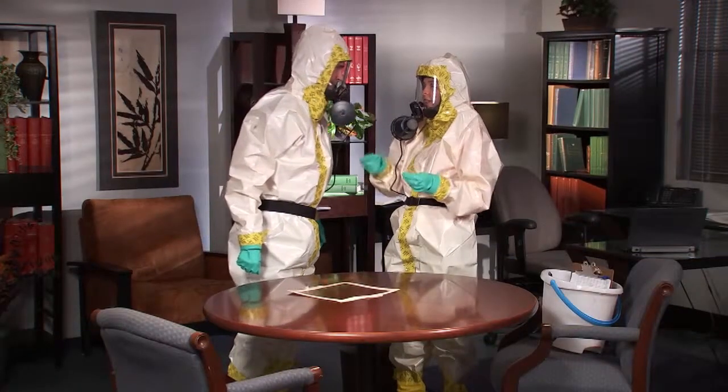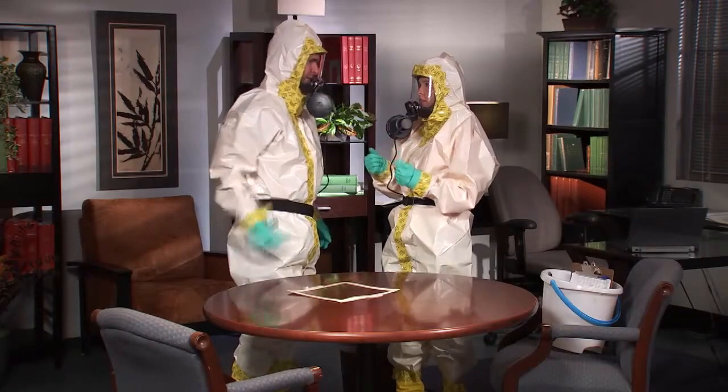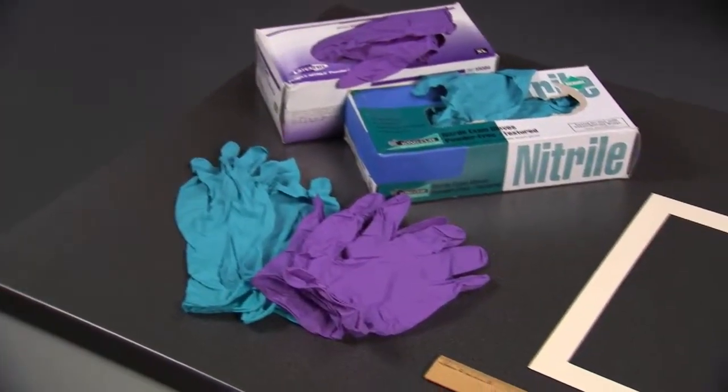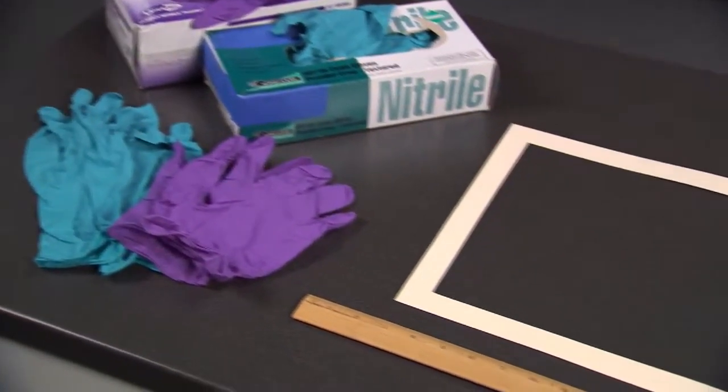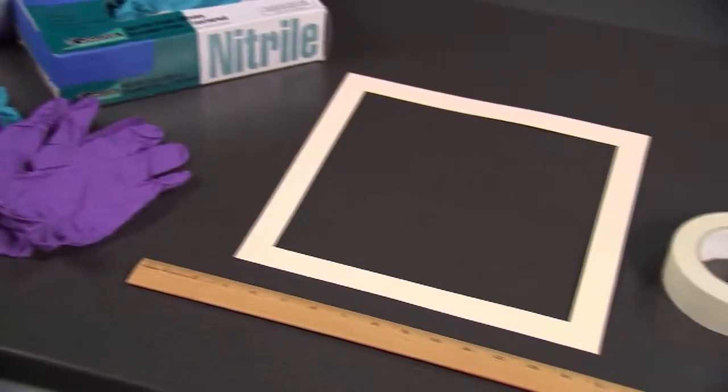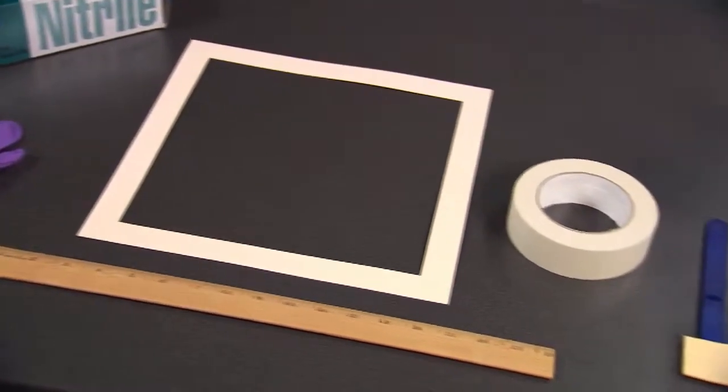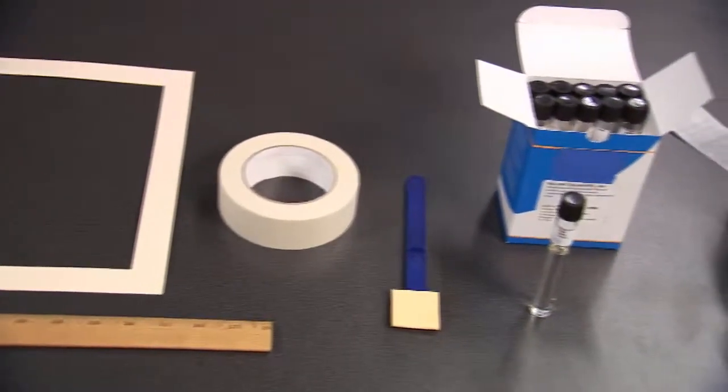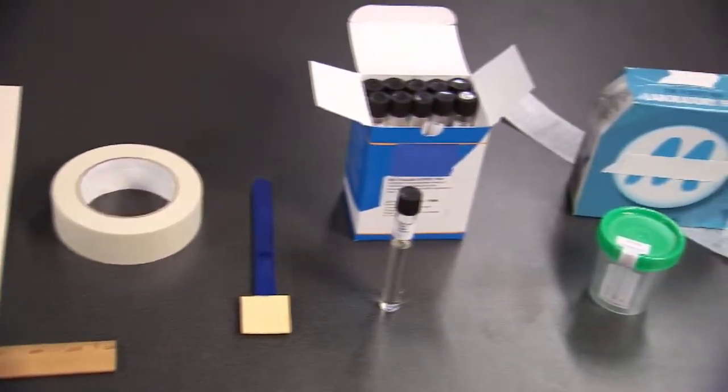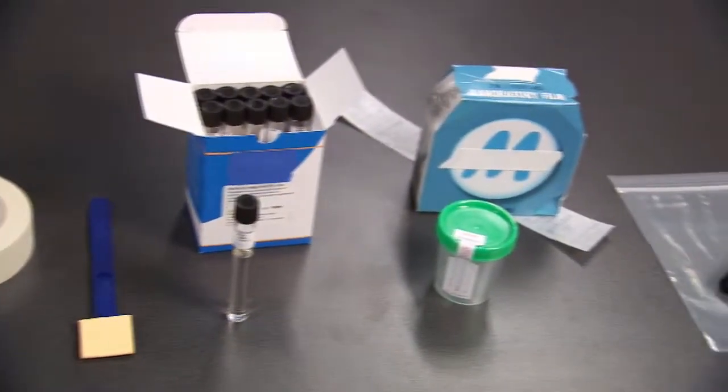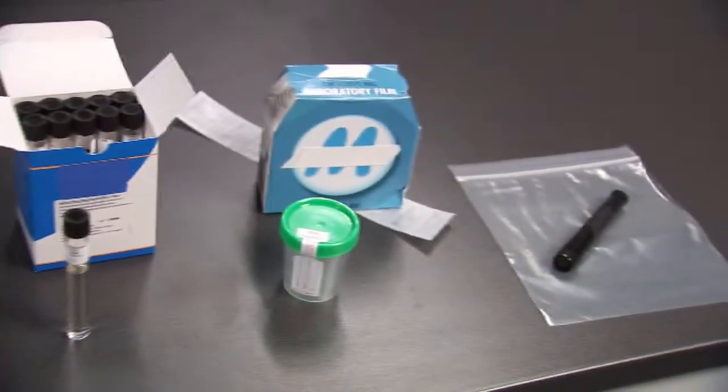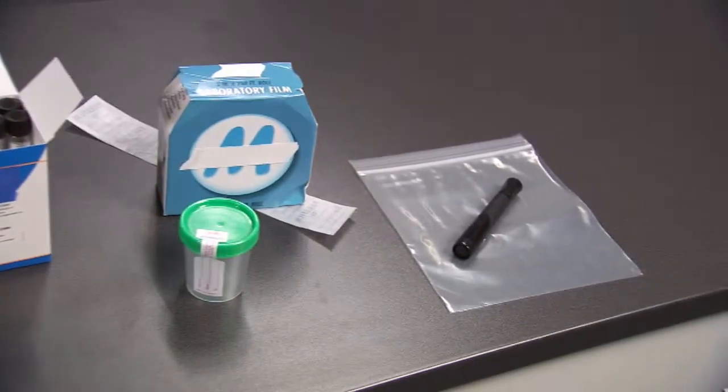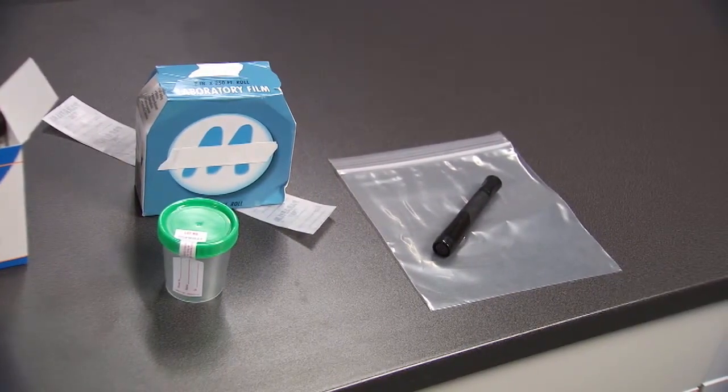Before sampling with a cellulose sponge, the sampler and the assistant will each need a pair of new gloves, a 10 inch by 10 inch disposable template or a disposable ruler, tape, a cellulose sponge, buffer solution, a screw cap specimen container, paraffin film, a resealable plastic bag, and a permanent marker.